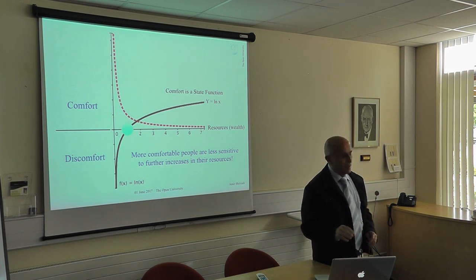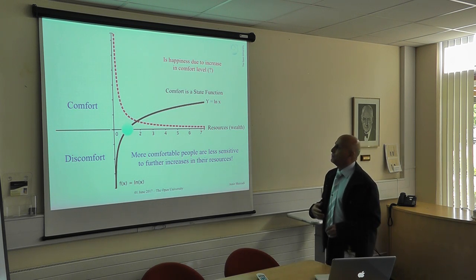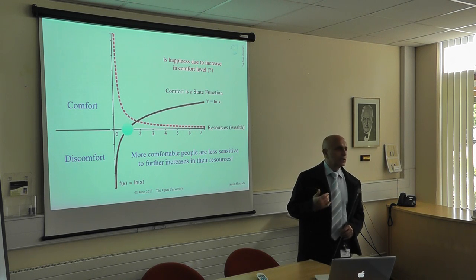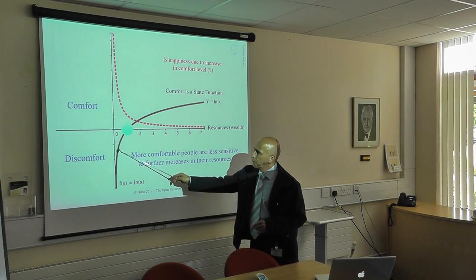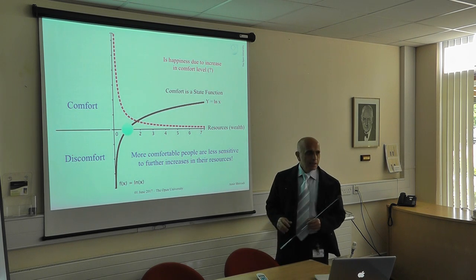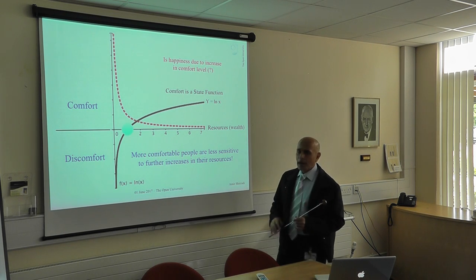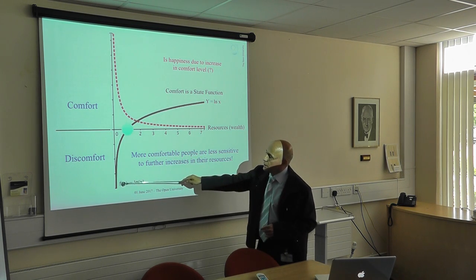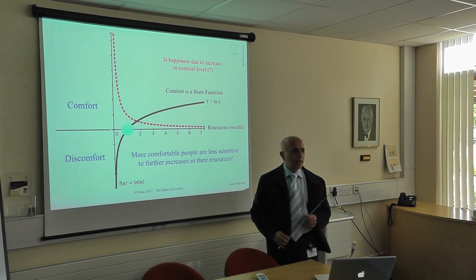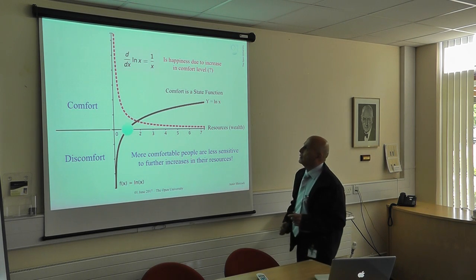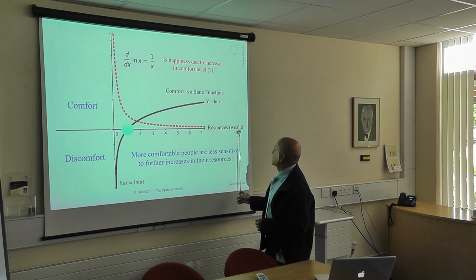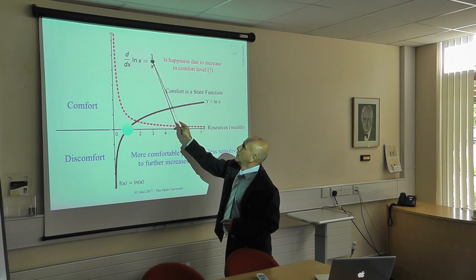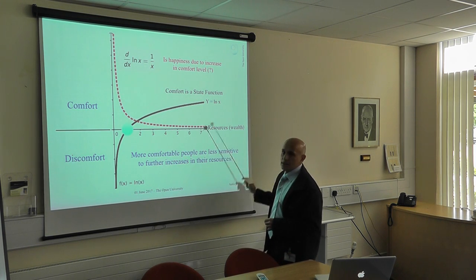Effectively, maybe happiness is the change in comfort — basically when you go from one point to another. If that is the case, we have to look for happiness not on the black curve but on the red one. The red one is showing the slope of the black curve — that's what is called the differential of ln(x), which is 1/x. And that is the red one.